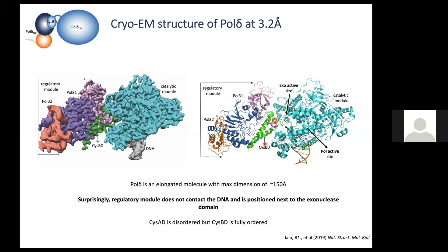On the left is the cryo-EM density for Pol delta after multi-body refinement, and on the right is the model we built into this density. Consistent with the small-angle scattering data, Pol delta is indeed a very elongated molecule with a maximum dimension of about 150 angstroms and only about 60 angstroms wide in the other dimension. Surprisingly, despite the presence of many oligonucleotide-binding modules, the regulatory module is positioned far from the DNA and makes no contact with it.